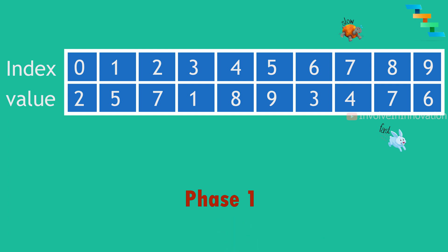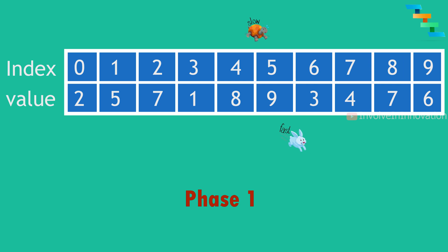In iteration 3, the slow pointer moves to index 4 (value 8). The fast pointer moves to index 7 and then to index 4. Now both slow and fast are at the same index 4 with value 8 — this is the intersection point. Notice this intersection point is not the start of the cycle; the cycle is 4→8→7→4. The fast pointer reaches the cycle first and gets caught, then the slow pointer arrives and they meet. This completes Phase 1.